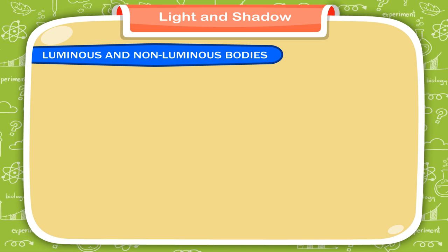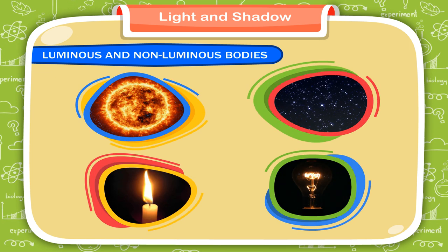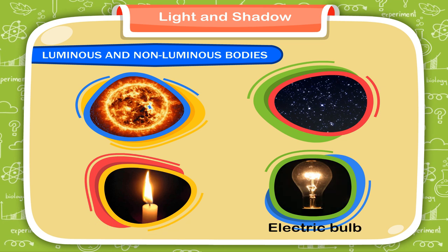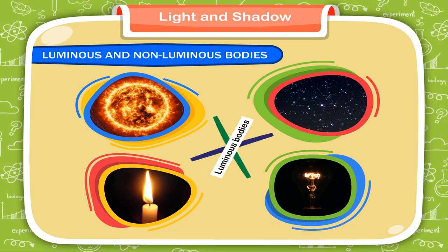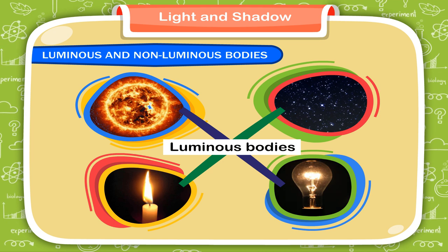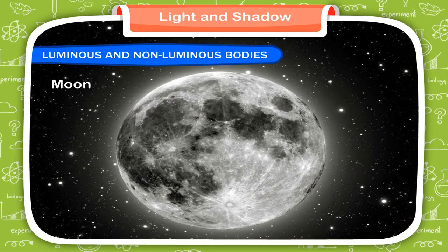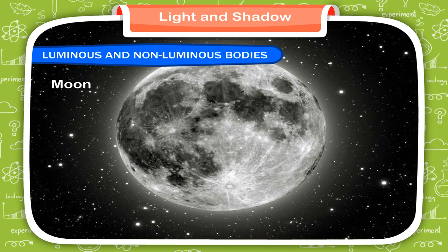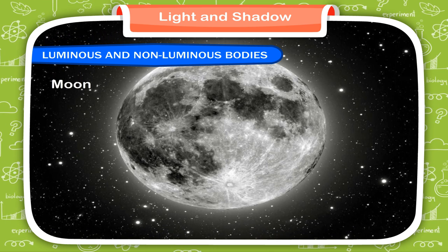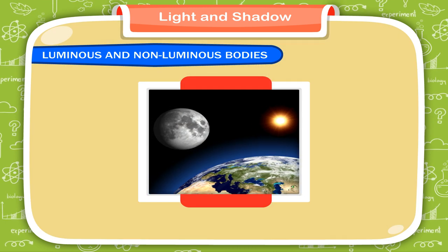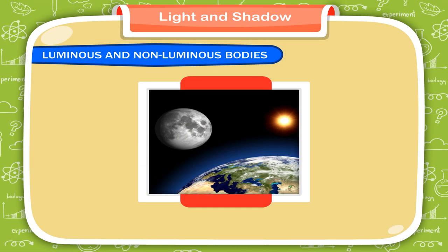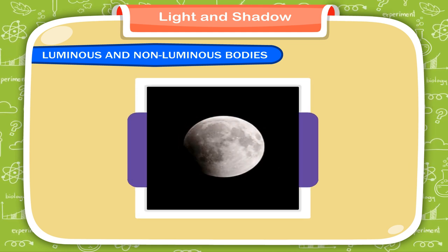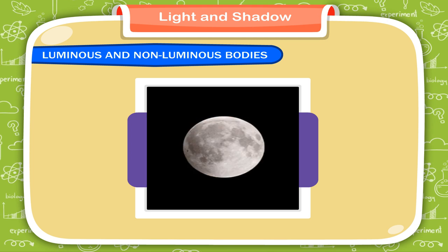Luminous and non-luminous bodies. Bodies such as the sun, stars, burning candle, electric bulb, etc., which produce their own light are called luminous bodies. Bodies such as the moon do not have light of their own and are called non-luminous bodies. We can see the moon shining because it reflects the light of the sun. When light falls on any non-luminous object, it gets reflected in all directions.